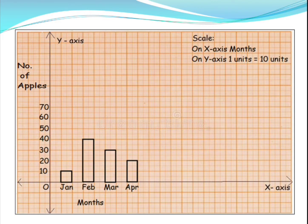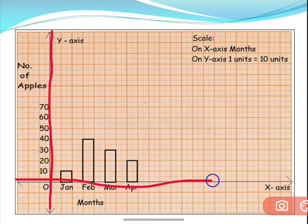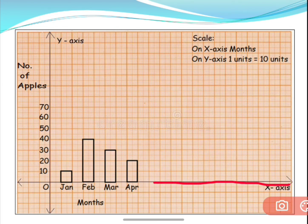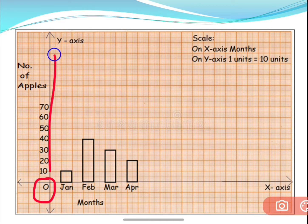This is your bar graph. The title can be 'apples' or 'number of apples sold in a month.' Take a graph paper, and in that make two lines — one horizontal and one vertical, like straight lines. They should meet at a point O which is called as origin. And also when you are writing the numbers on y-axis, it becomes 0 at the origin.